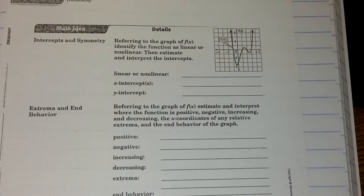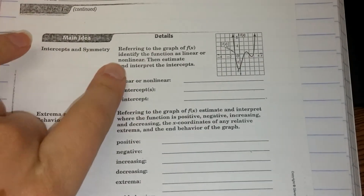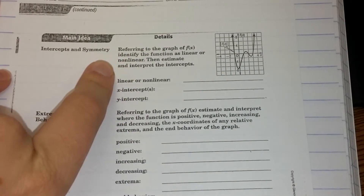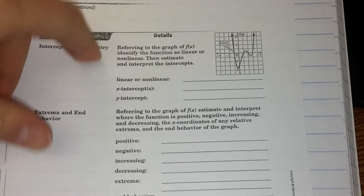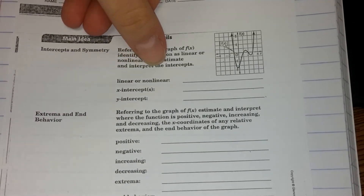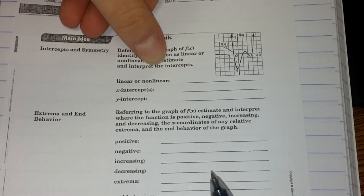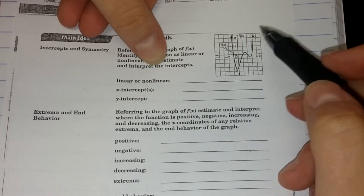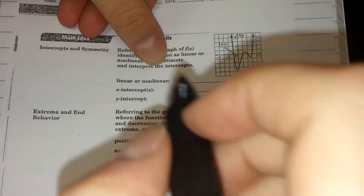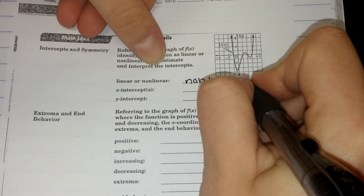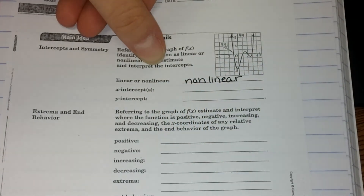Referring to the graph of f of x, identify the function as linear or nonlinear, then estimate and interpret the intercepts. Looking at this graph, it definitely doesn't form a line, so this is a nonlinear function — it does not make a line.